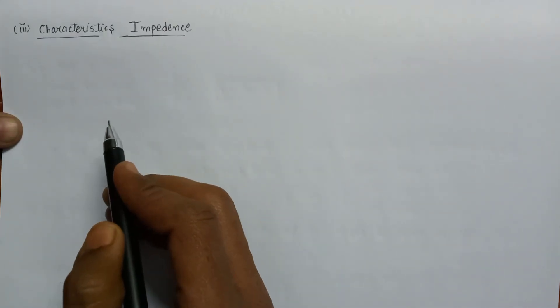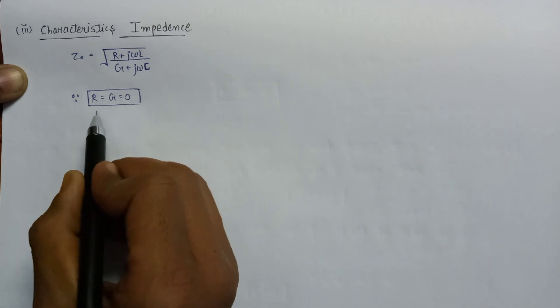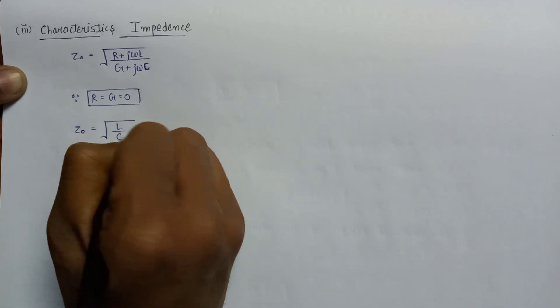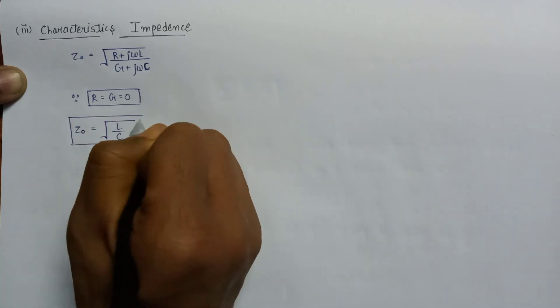The third parameter associated with lossless transmission line is characteristic impedance. The characteristic impedance is equal to the square root of (R + jωL) over (G + jωC). Since for the lossless transmission line R equals G equals zero, on applying this condition in the expression for characteristic impedance, the value of Z₀ becomes the square root of L over C. This is the final expression for characteristic impedance.